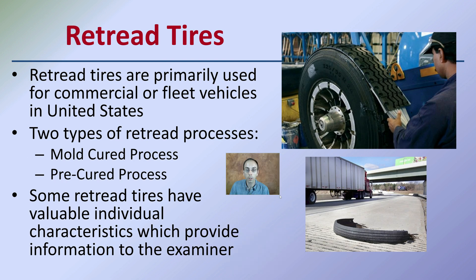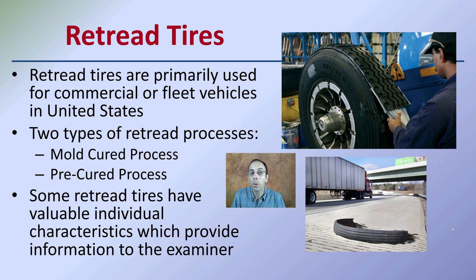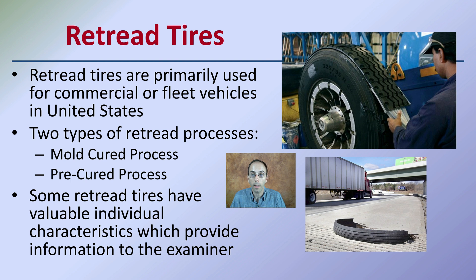Lastly, we have retread tires, which are primarily used for commercial or fleet vehicles in the United States. There are two types of retread processes: a mold cure process and a pre-cured process. Some retread tires have valuable individual characteristics which provide information to the examiner. As the name implies, they are a new tread put on an existing older tire. Because of this process, they can break down — especially with highway heat — and become a road hazard. Be mindful that retread tires have new tread but are on older or potentially original tires.